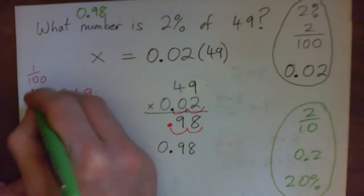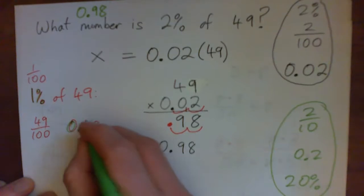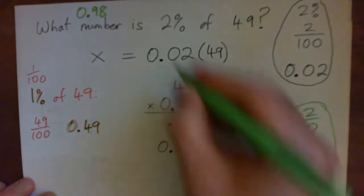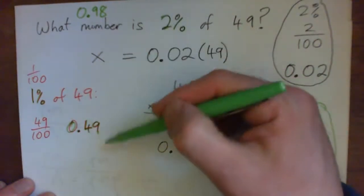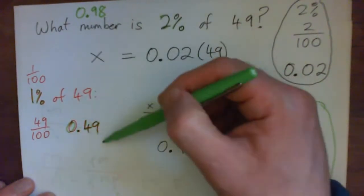So 1% is 0.49. So therefore, 2% should be 0.98. That makes sense, doesn't it? It's like twice 0.49, right?